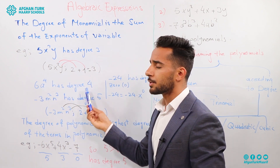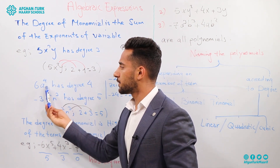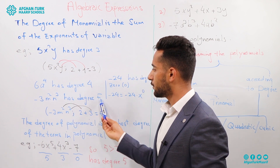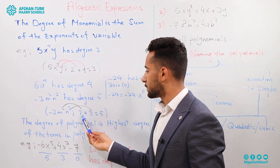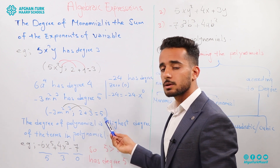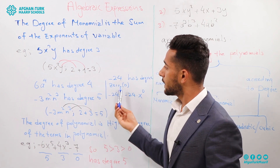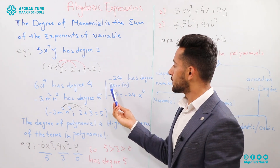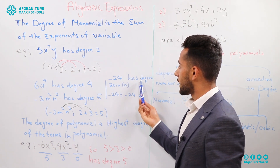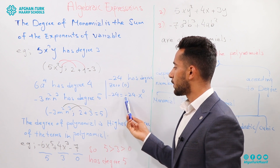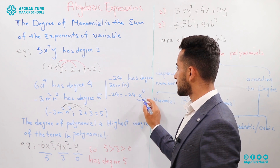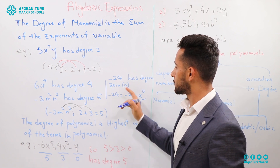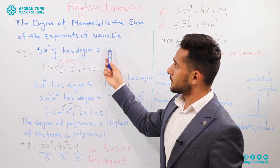6A to the power of 4 has degree 4, because there is just one variable and its power is 4. Minus 3M squared N cubed has degree 5, because there are two variables with powers 2 and 3, and 2 plus 3 equals 5. Minus 24 is a constant term — it has no variables, so its degree is 0, because minus 24 equals minus 24 times X to the power of 0.